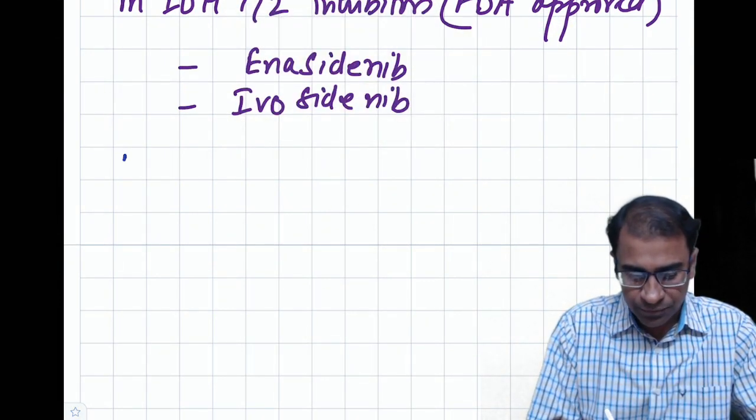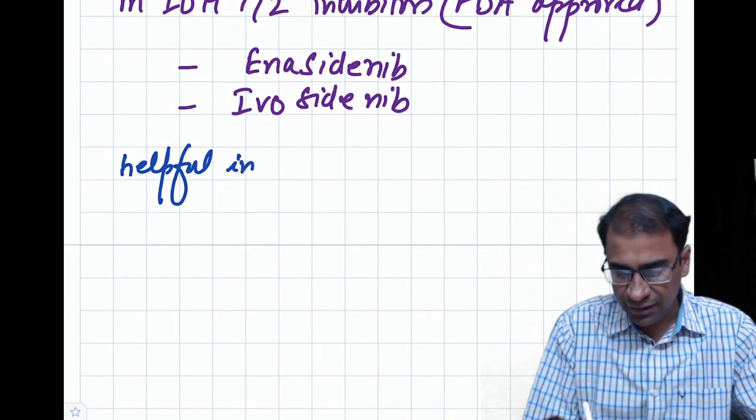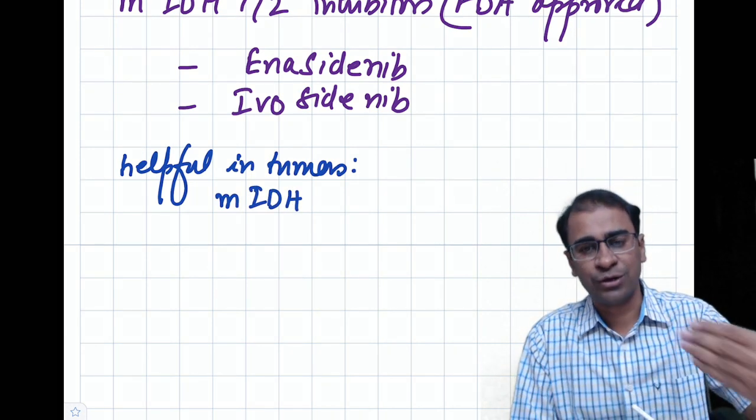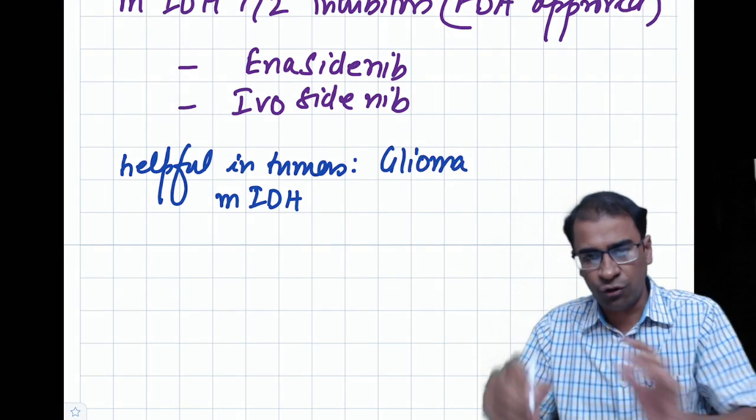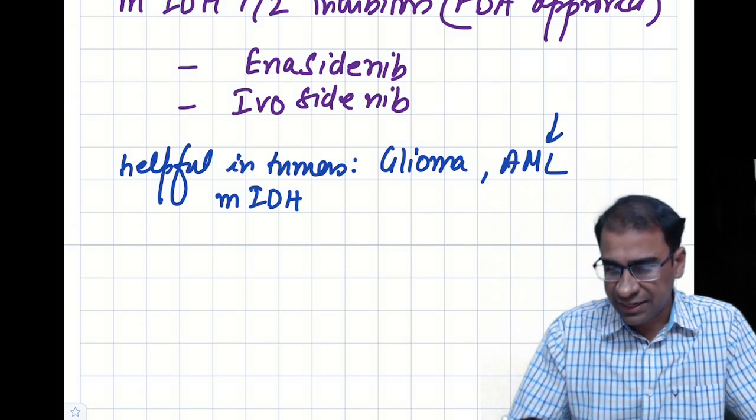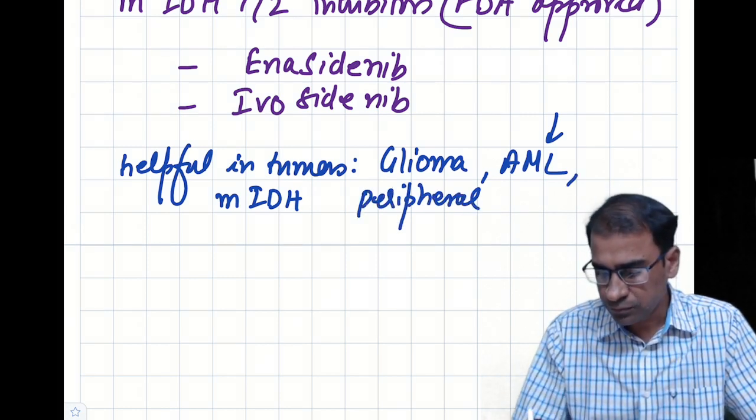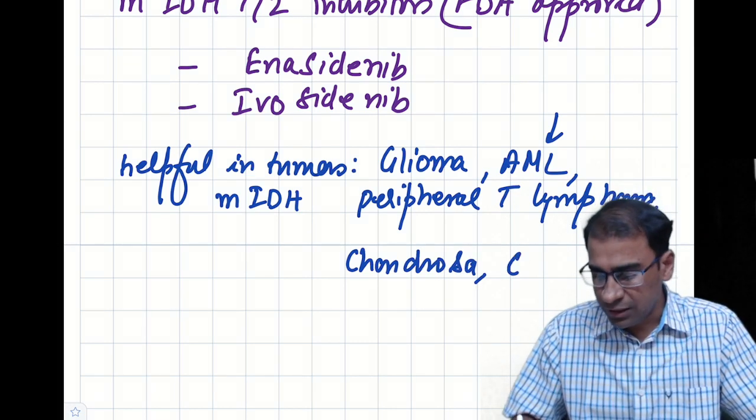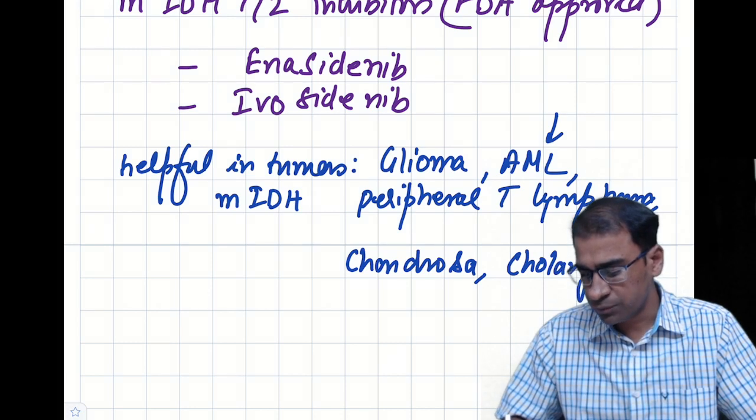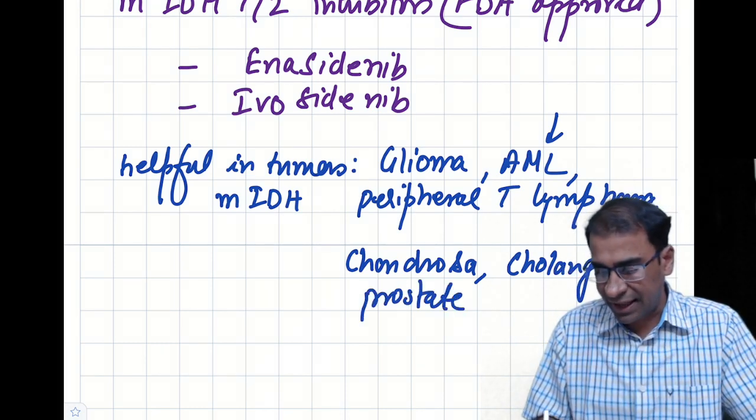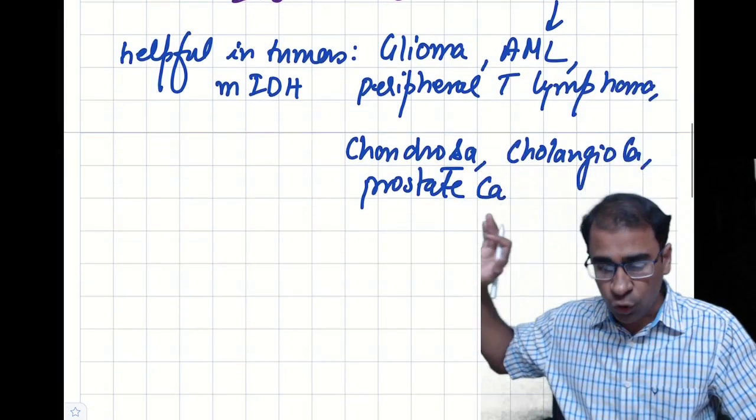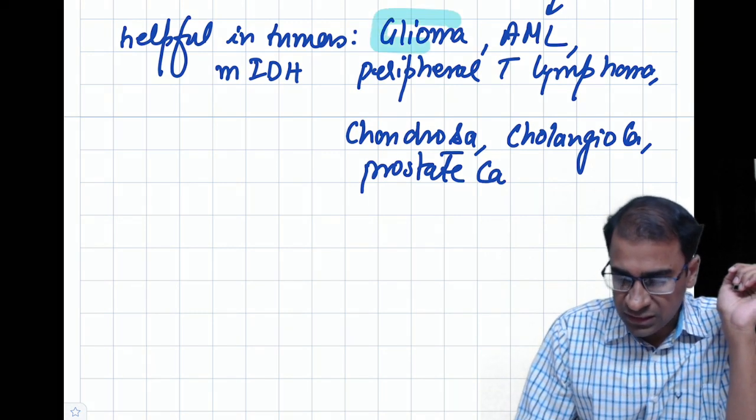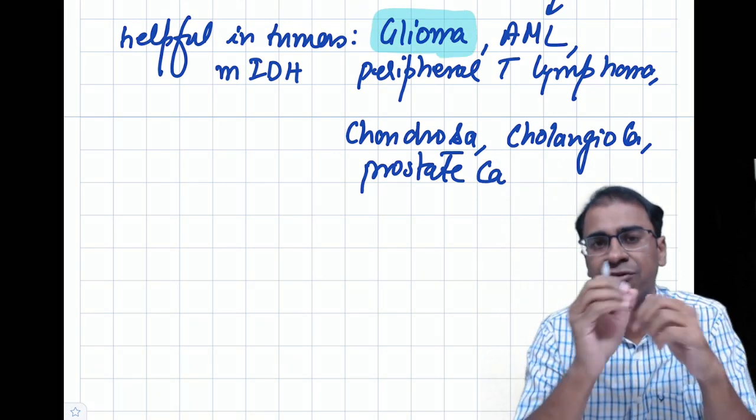Which are those cancers? They are helpful in tumors which have the mutant IDH mutation. These include gliomas, AML - which is very important - peripheral T cell lymphomas, chondrosarcomas, cholangiocarcinomas, and prostate cancers. These drugs are being used to treat all these tumors nowadays.